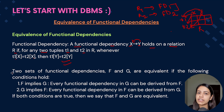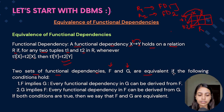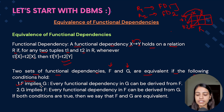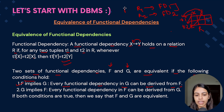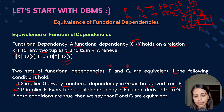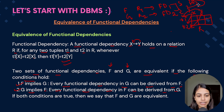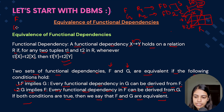When can we say that two functional dependency sets are equivalent? Two sets F and G are equivalent if two conditions hold. First, F implies G — meaning F covers G, so every functional dependency in G can be derived from F. Second, G implies F — every functional dependency in F can be derived from G. If both conditions are true, then F and G are equivalent.